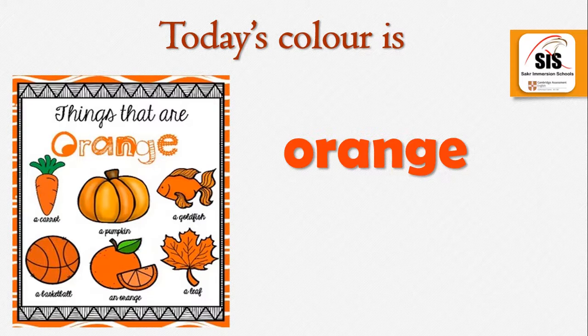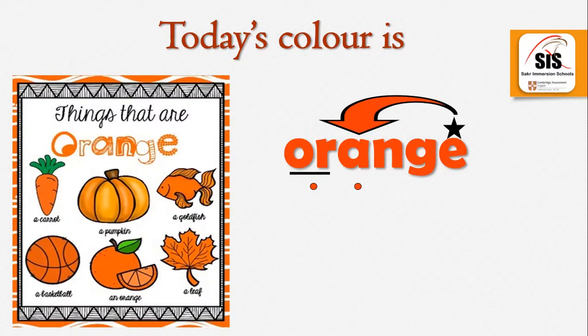Here the U and R together is a diagraph pronounced 'or'. Here we have the magical E at the end of the word which makes the A letter pronounced 'A'. Here the G, when it's followed by an E, makes the sound J.